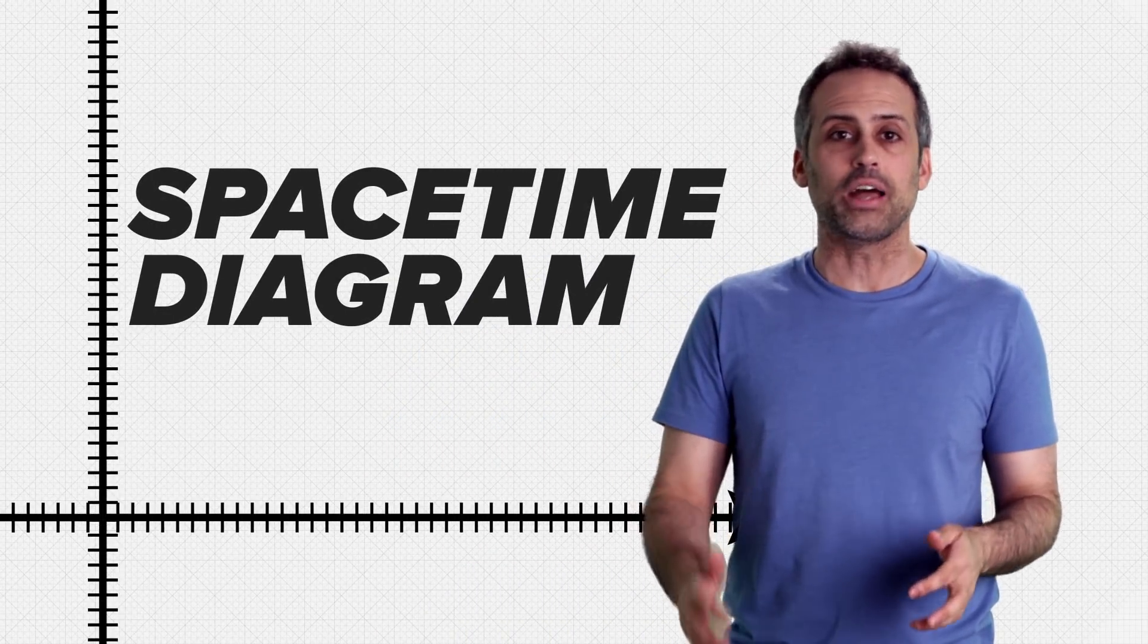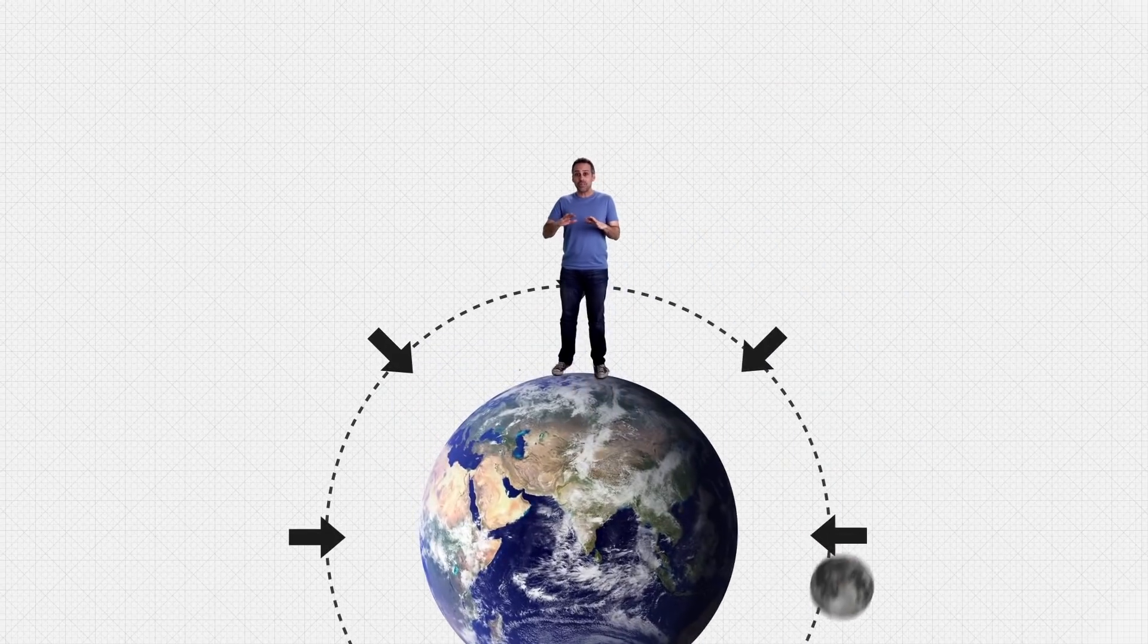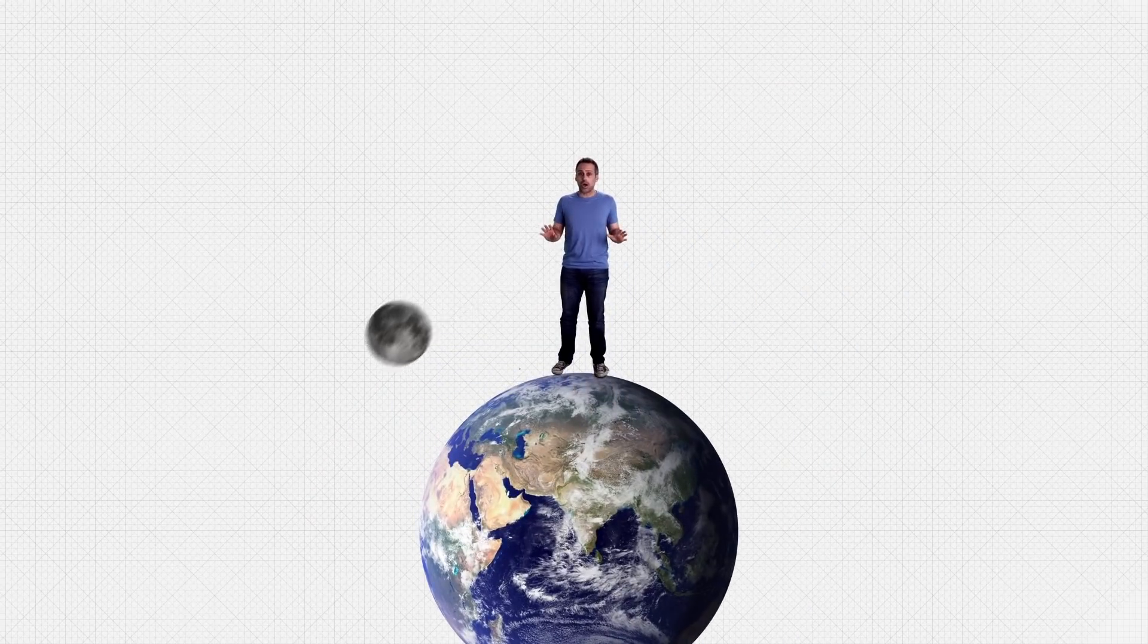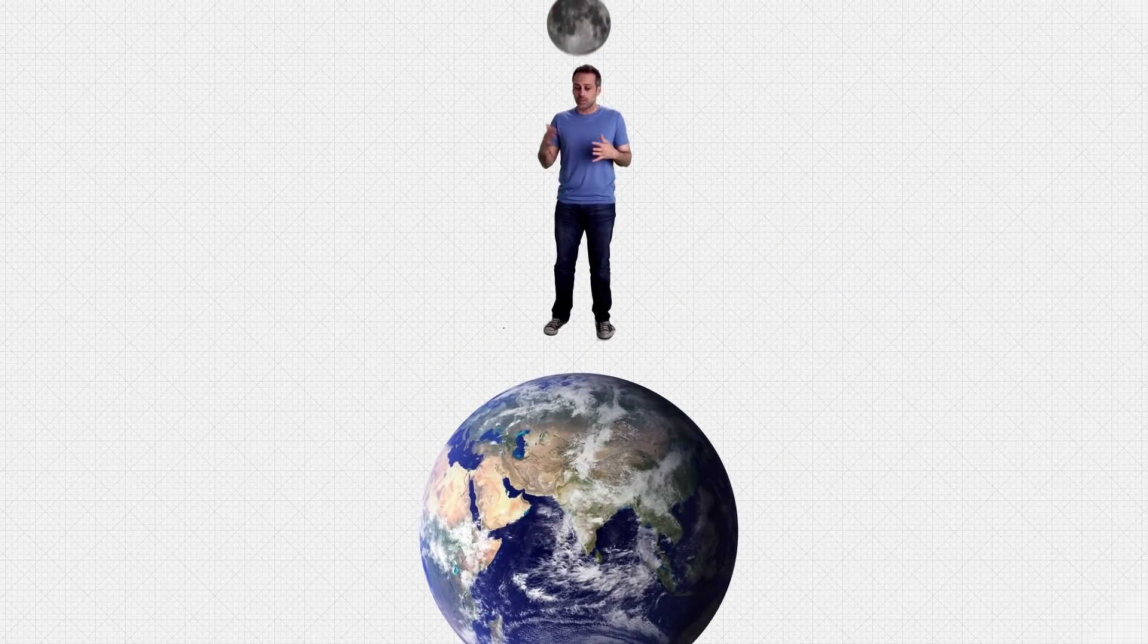Our principal tool for exploring flat spacetime geometry will be something called a spacetime diagram for representing physical events. Here's how it works. Pretend the world has no gravity, Newtonian or otherwise. I'm not glued to Earth's surface. The moon doesn't orbit Earth. In fact, there is no Earth since Earth is held together by gravity. This gravity-free world is what flat spacetime describes.